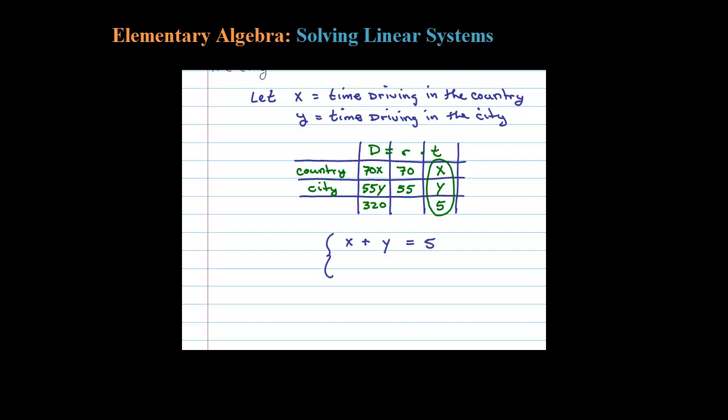Now the second equation can be gotten from this column here. The total distance was 320, so the distance driving in the country was 70X, plus the distance driving in the city was 55Y, and that total distance is 320.